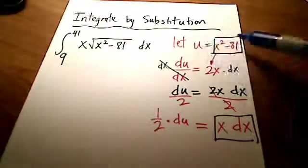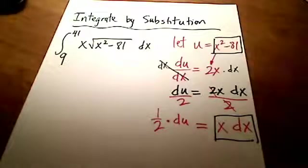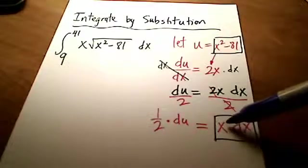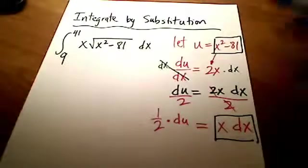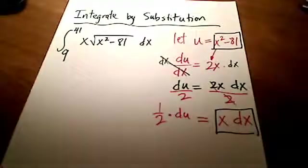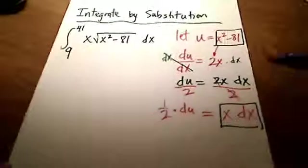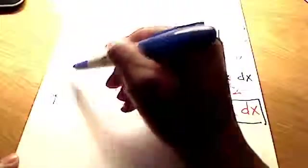Okay, so I've got in place of u, I've got an x squared minus 81, or in place of x squared minus 81, I've got a u. Maybe I should say it that way. And in place of x dx, I'm going to put in a 1 half du. Alright, so let's rewrite our original problem now with these variables or the substitution going on here. So I've got it going from 9 up to 41.